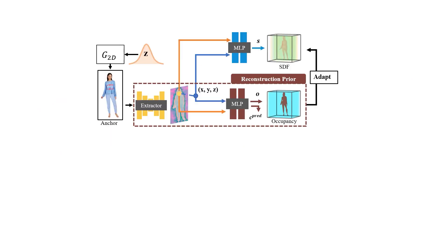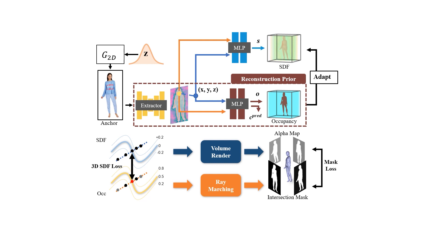In the geometry branch, we explicitly utilize a pre-trained 3D reconstructor, PIFuHD, to extract pixel-aligned features from the anchor image and provide extra fine-grained geometry supervision for HumanGen. We propose a geometry adapting scheme to turn it into a generative version with signed distance field output, so as to support efficient and high-resolution volume rendering.